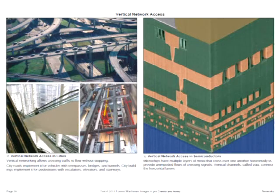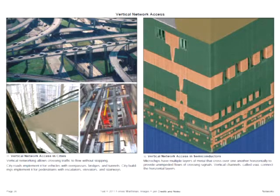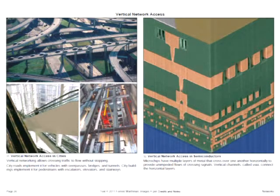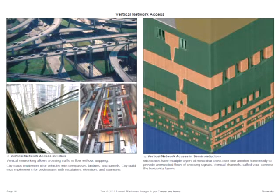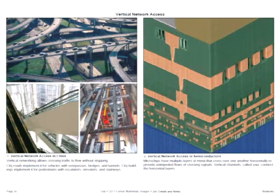Vertical networking is necessary for both cities and microchips. In cities, vertical networking of transportation and freeways is done with overpasses, bridges, and tunnels. The overpassing allows flows of traffic that are crossing each other to proceed without impeding one another's travel. Vertical networking in buildings is done with elevators, escalators, and stairways. In microchips, it's done with vertical channels called vias that connect metal layers — there's a chip with several layers of copper running horizontally and a few vertical vias.